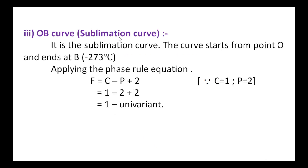The OB curve is the sublimation curve. The curve starts from point O and ends at B, corresponding to minus 273 degrees centigrade. Applying the phase rule with C = 1 and P = 2: F = 1 minus 2 plus 2 = 1, so the system is univariant.